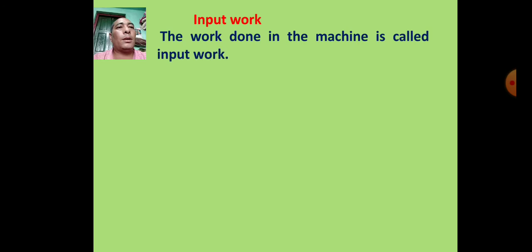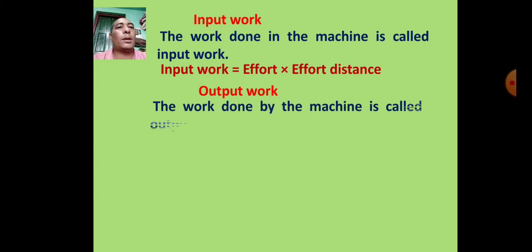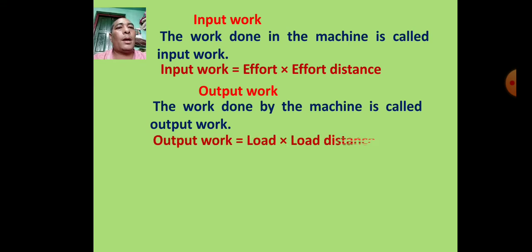The work done in the machine is called input work. Input work equals effort into effort distance. The work done by the machine is called output work. Output work equals load into load distance.